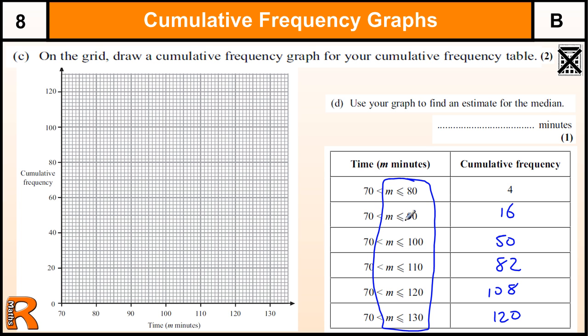Which helps you realize that hopefully that's the value you need to plot. So we need to plot 80 at 4. So 4 at 80, sorry. Now using the scale, we have 10 squares as 20. So each square is going to be 2. So 4 at 80 is going to be 2 squares.